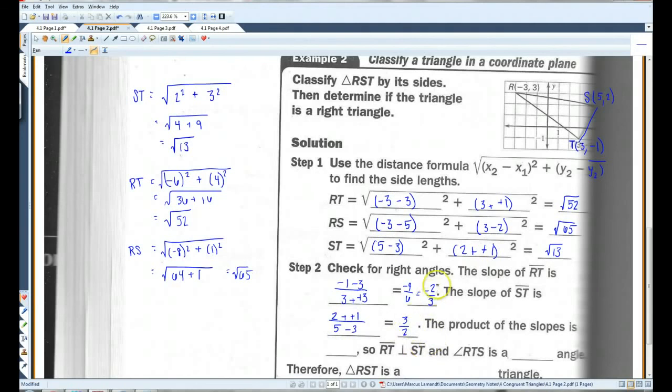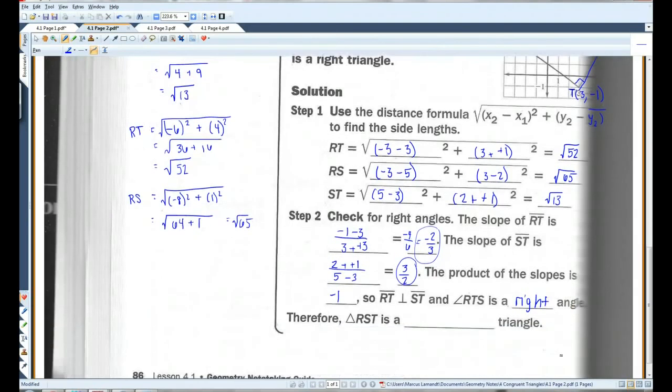So, notice that this and this are opposite reciprocals. So, we know that this is going to be a right angle. And the product of the slopes is negative 1. They're opposite reciprocals of each other, so, they're perpendicular. And angle RTS is a right angle. Okay. So, because of that right angle, and because all three sides are different lengths, triangle RST is a right scalene triangle.